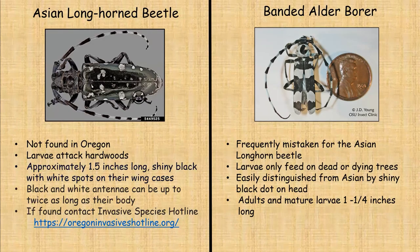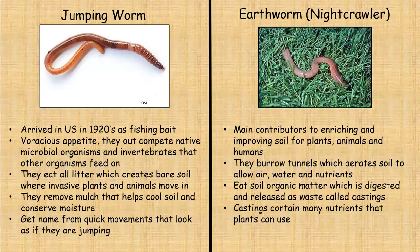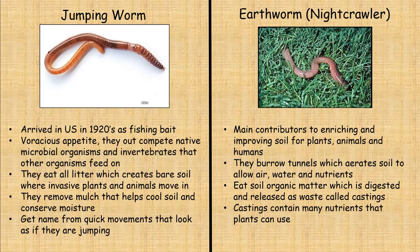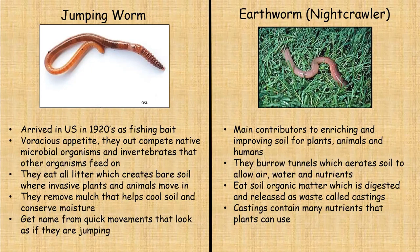The jumping worm is invasive — this is not an insect, but it is invasive. It is probably here to stay, but we want to keep it from spreading as much as possible. It arrived in the U.S. in the 1920s as fishing bait. It has a voracious appetite and outcompetes native microbial organisms and invertebrates that other organisms would feed on. The jumping worms also eat all the leaf litter, which can create bare spots where invasive plants can move in, and they remove mulch that we use to cool soil and conserve moisture.